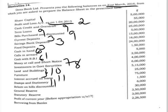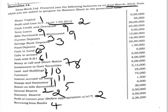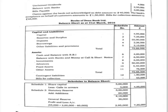Rebate on bills discounted is equivalent to income received in advance, which represents a liability, so it should be shown under other liabilities in note number 5. General reserve is shown in note number 2. Statutory reserve is also note number 2. Profit of the current year before appropriations is also shown in note number 2 under reserves and surplus. Borrowings from the bank go in note number 4 under borrowings. Unclaimed dividends — where some shareholders have not claimed their dividend — is a liability shown in note number 5.